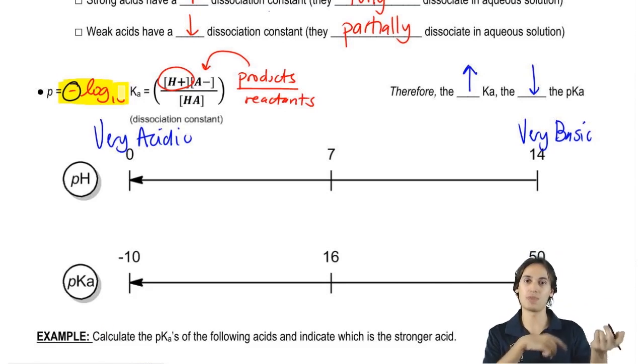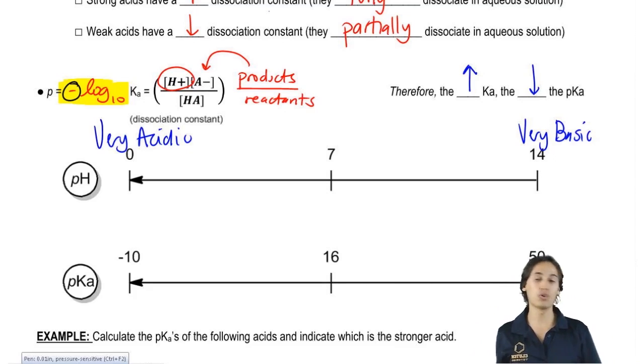So your strongest acids are always going to have the lowest numbers for pKa. Does that make sense? And it's because we're using the negative log, not the positive, so it's always going to be the opposite. Cool so far? Awesome.